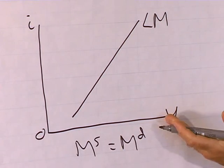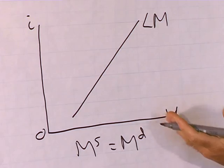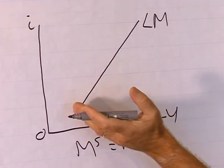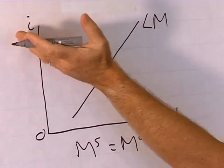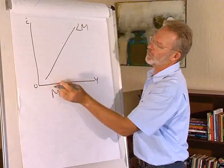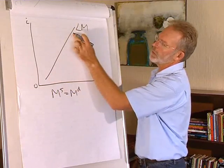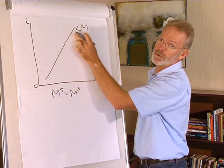As the level of production increases, the financial market is in equilibrium at a higher interest rate. Therefore, the LM curve has a positive slope.